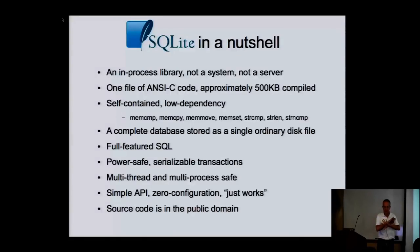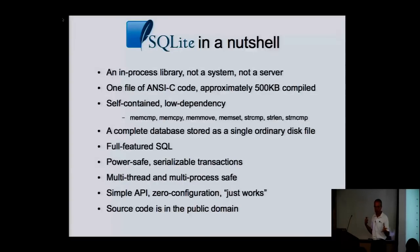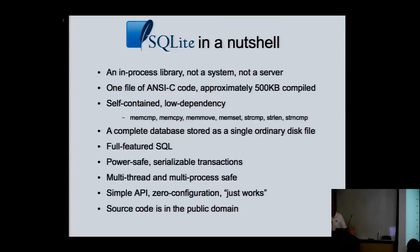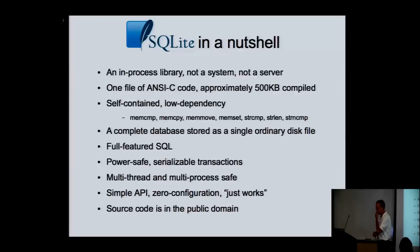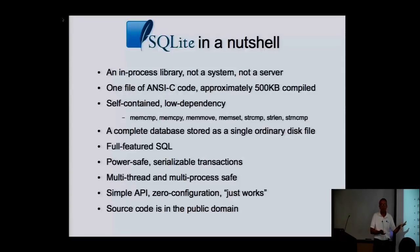So what is SQLite? It's different from most other database engines — it's a library, not a system, not a process. If you've worked with any other database, it's probably a system running in a data center somewhere. SQLite is a library that just links into your application. It's delivered as a single file of ANSI C code. We have hundreds of files that get concatenated together, but that makes it very easy to deploy. It compiles down to roughly 500 kilobytes — very small and compact with low dependencies.